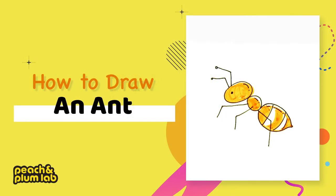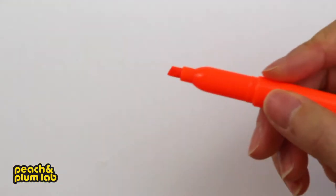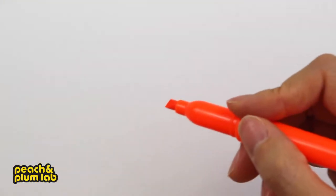Hello everyone, this is Lee from peach and plum lab, a place for creative kids to learn and grow. Today I'm going to show you guys how to draw an ant. First let's pick the orange highlighter.